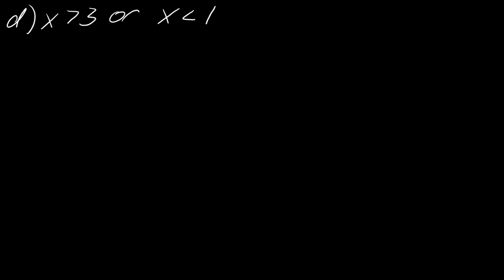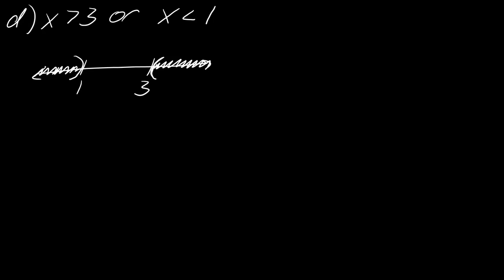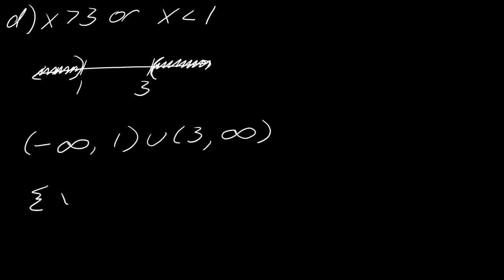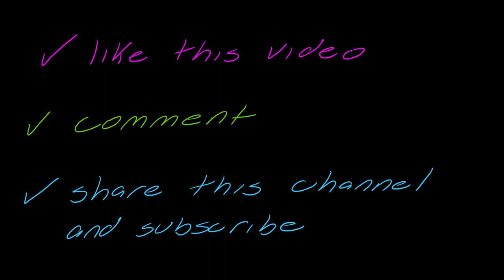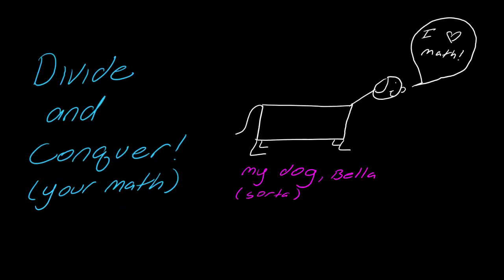Now for D — again, you're going to put both of these on the same number line at the same time. Here's 3, here's 1. I'm going to go this direction for x is greater than 3, and then x is less than 1 will go this direction. For my interval notation, reading a book from left to right: I start at negative infinity and go to 1 — they both get round brackets. Then we use the union sign to show we're continuing from 3 to positive infinity. And then you've got your set notation. So that is a quick review. If that was helpful, please like this video, comment with any questions or feedback, and subscribe and share this channel with your friends.